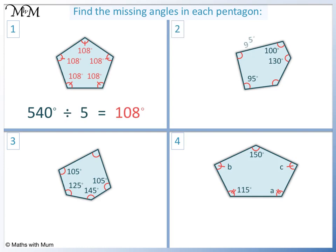Question 2. 95 plus 95 equals 190. Plus 100 equals 290. Plus 130 equals 420. 540 take away 420 equals 120. So the missing angle is 120 degrees.